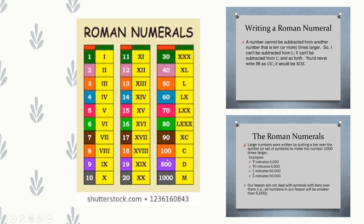100 is written as C, 500 as D, and 1000 as M. A number cannot be subtracted from another number that is 10 times larger — so I cannot be subtracted from L, V cannot be subtracted from C. We will never write 99 as CIC; it will be XCIX. For large numbers, a bar is placed over the symbol to make it 1000 times larger. For example, V-bar indicates 5 into 1000, which equals 5000. L-bar indicates 50 into 1000, which equals 50,000.